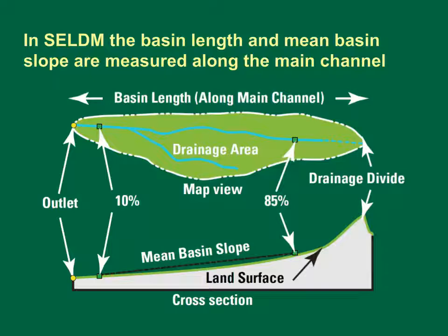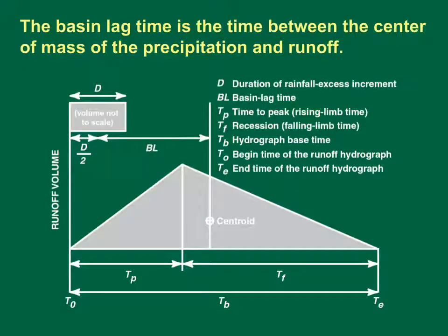The length and slope are important because they determine the timing of runoff from the basin. This is a schematic diagram showing the variables that define a triangular runoff hydrograph. The total duration of the hydrograph from the beginning time to the end time is known as the base time, TB. There are two parts to a triangular hydrograph: the rising limb and the falling limb. The duration of the rising limb is known as the time to peak, TP. The duration of the falling limb is the recession time, TF. The basin lag time, BL, is the fundamental timing variable for a given site, defined as the time between the center of mass of the unit rainfall and the center of mass of the associated runoff. The basin lag time is commonly defined as a characteristic of the drainage basin rather than a characteristic of a storm event.